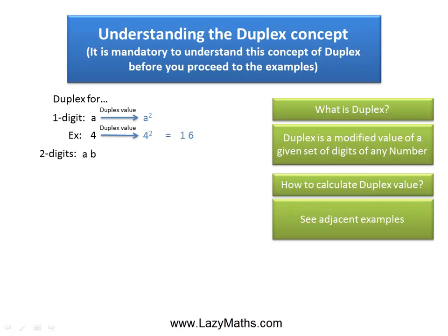A duplex value for two digit number, as in A, B, A and B being the two digits, is 2 times A times B, or double the product of A and B. As an example, if we have the number 45, the duplex value for 45 is going to be 2 times 4 times 5, which is 40.